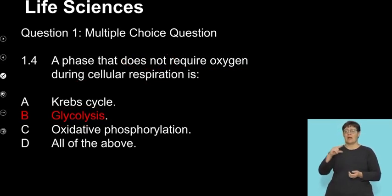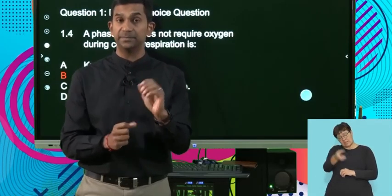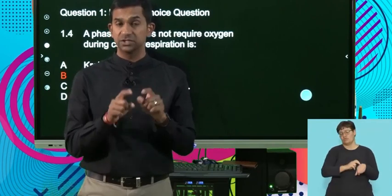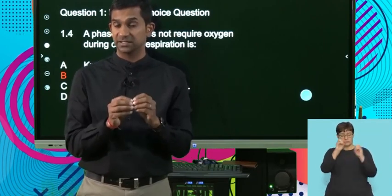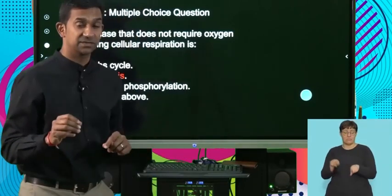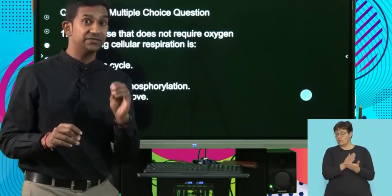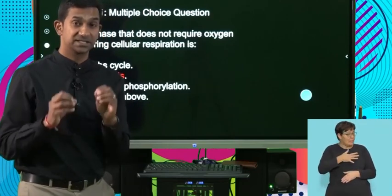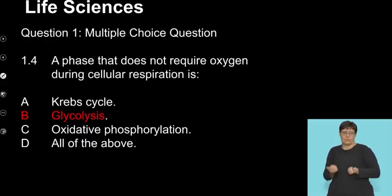The answer is glycolysis, because that is the reaction that takes place outside in the cytoplasm, independent of oxygen, where at least two molecules of pyruvic acid are produced and ATP is produced. And we said that these were reactions that were ensuring that even in the absence of oxygen, that some energy was produced.